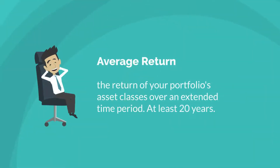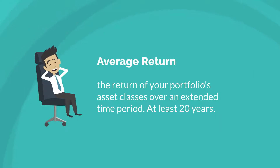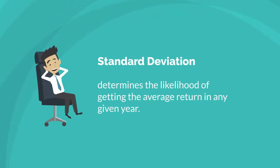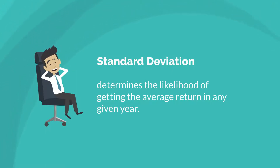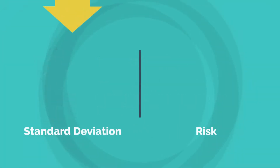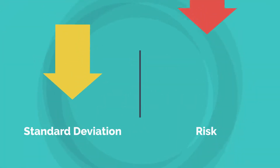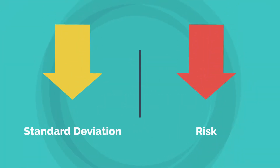Average return is the return of your portfolio's asset classes over an extended time period, at least 20 years. Standard deviation determines the likelihood of getting the average return in any given year — the lower the standard deviation, the lower the risk.